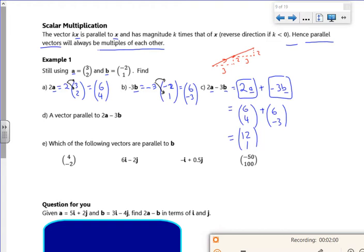Now a vector parallel to it just has to be a multiple of it. It doesn't matter what it is, you can just double it. So a vector parallel to it could be (24, 2). Or it could be that you've multiplied it by 10. As long as it's a multiple of the vector, that's fine.